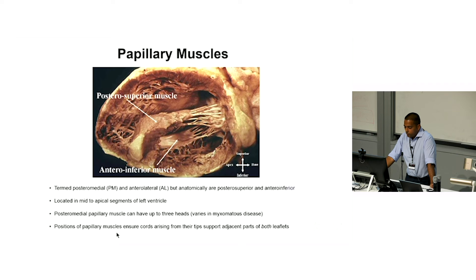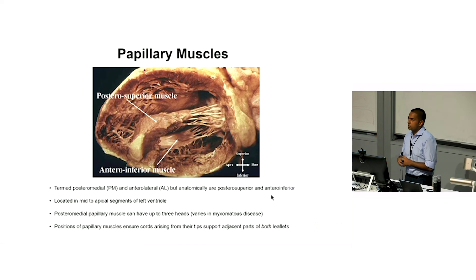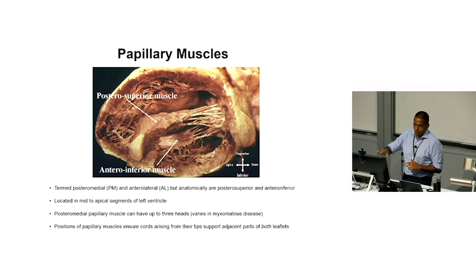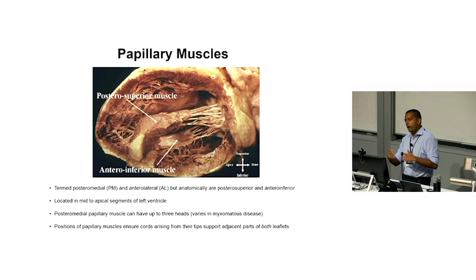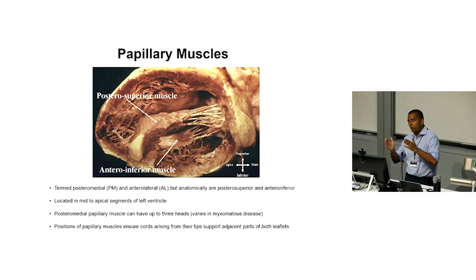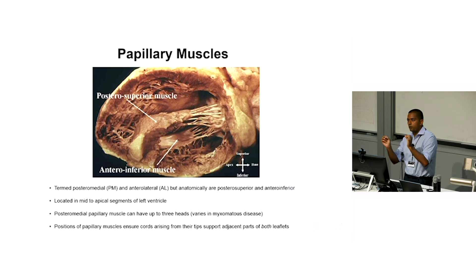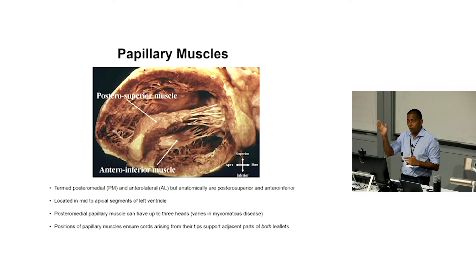The positions of the papillary muscles ensure that cords arising from them go to both leaflets. There's a misconception that the posterior superior muscle supplies only certain parts of the valve. In reality, the chordae tendineae from each papillary muscle go to both the anterior and posterior leaflets and to all of the scallops.